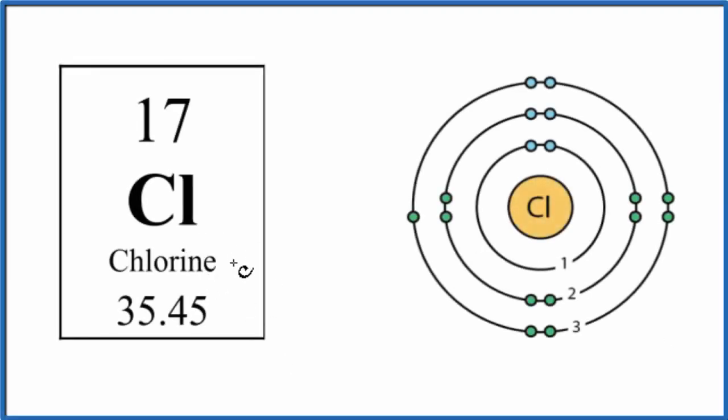Let's look at the atomic structure for chlorine, that's Cl, on the periodic table. And we're going to use a Bohr diagram to help us visualize the structure of the chlorine atom.